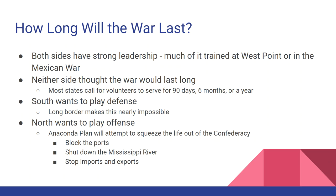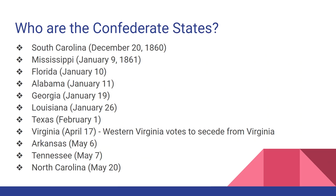The south wants to play defense, but the long border makes that nearly impossible. At its largest, the Confederate army was about a million to a million and a half people. The north wants to play offense and develops the Anaconda Plan — designed to squeeze the life out of the Confederacy by blockading ports, shutting down the Mississippi River, and stopping all imports and exports. However, politicians wanted immediate results, so the plan was put on the back burner, though it would eventually help win the war for the north.